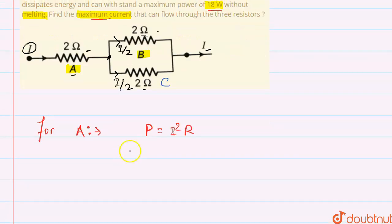So we'll equate 18 watt = I² × 2 ohm. From here we'll get I² = 9 ampere square, and when we take root on both sides, we'll get I = 3 ampere.